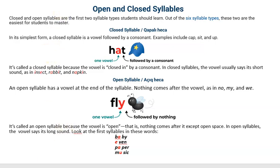Closed and open syllables are the first two syllable types students should learn. Out of six syllable types, these two are the easiest for students to master.